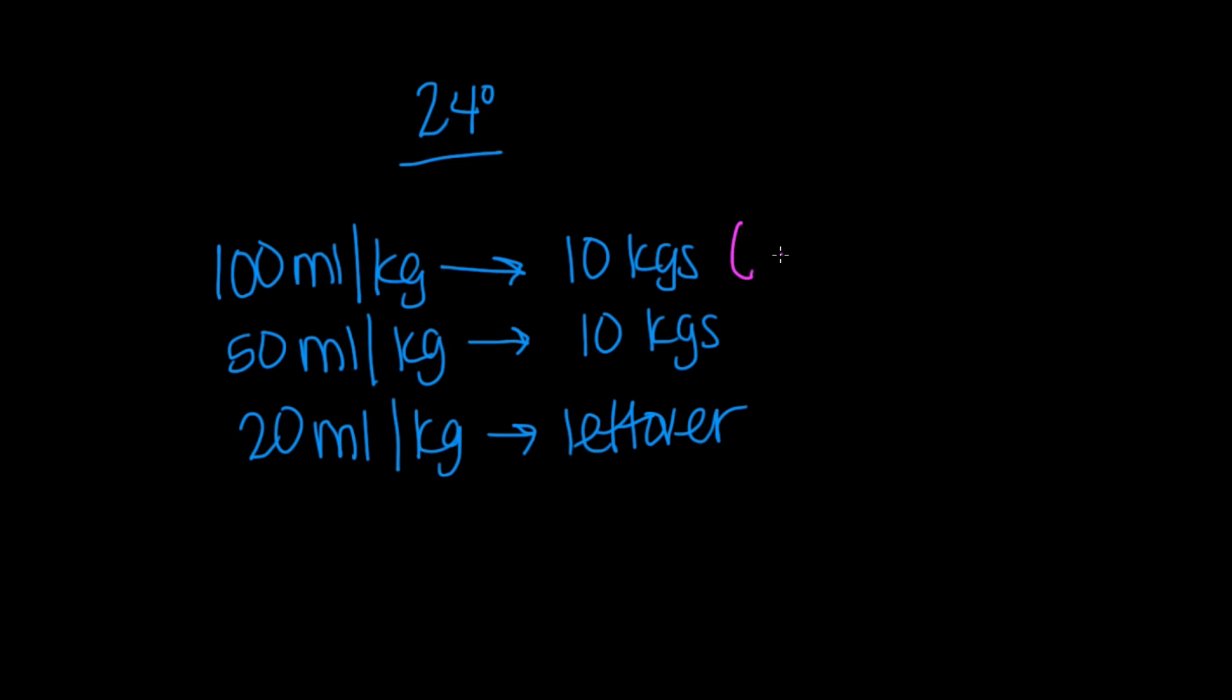And then we'll give 50 mLs per kilogram for the second set of 10 kilos. And then we'll give 20 mLs per kilogram for everything that's left over or remaining. So what does this mean? That for your first 10, so up to 10 kilograms, it's 100 mLs per kilo. And then for your second 10, which would bring you to 20, we give, so let's say 11 to 20 kilograms. And then everything after 20 kilograms, which would be 21, we give 20 mLs.